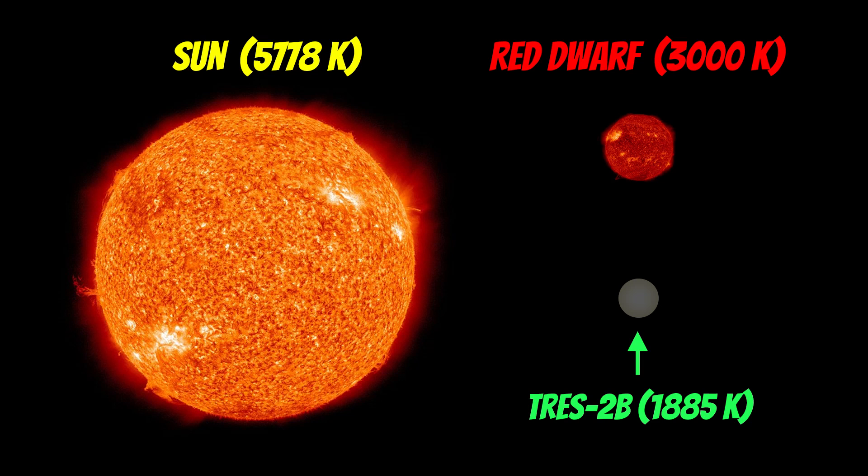That temperature given is its equilibrium temperature, its average temperature across the whole object. Because it's tidally locked, it's going to have a contrast between the temperature on the day side and the night side. It's going to be in excess of 2,000 Kelvin on the day side and cooler on the night side. This highlights how hot it is, and it's approaching the sort of temperature you might get on the surface of a small or reddish star.